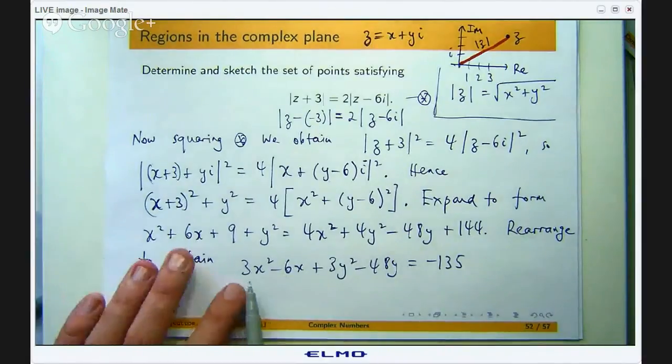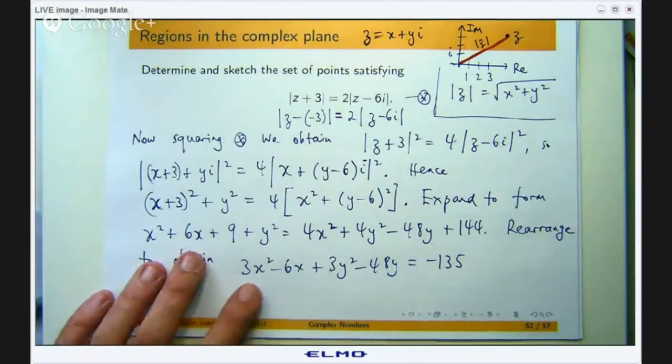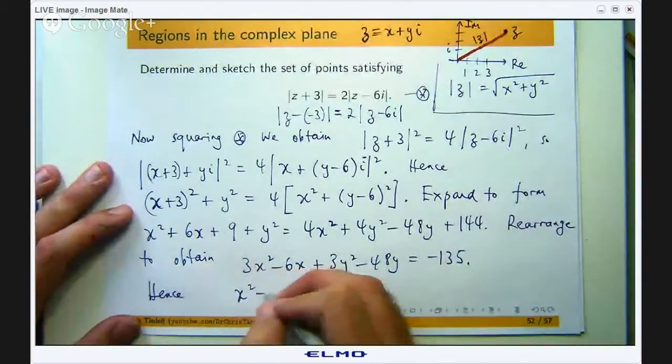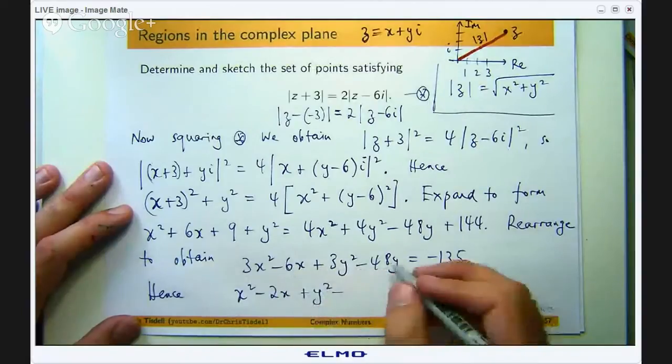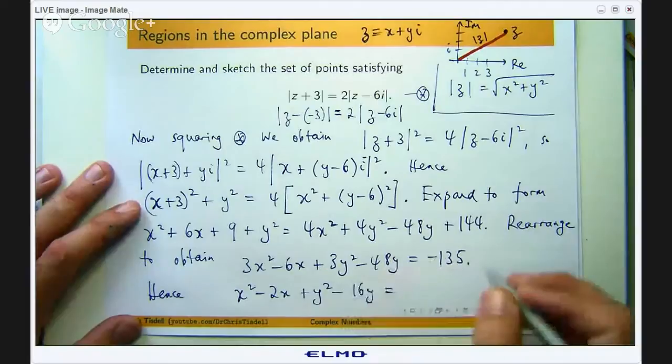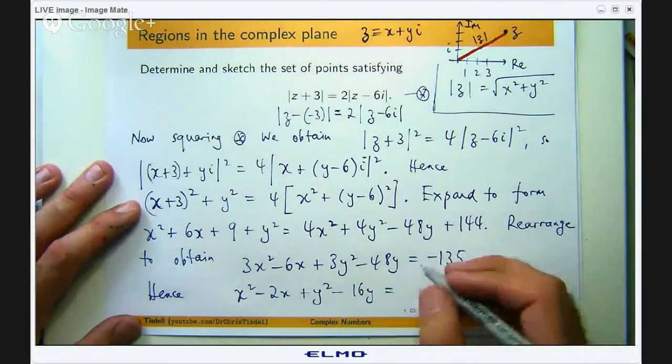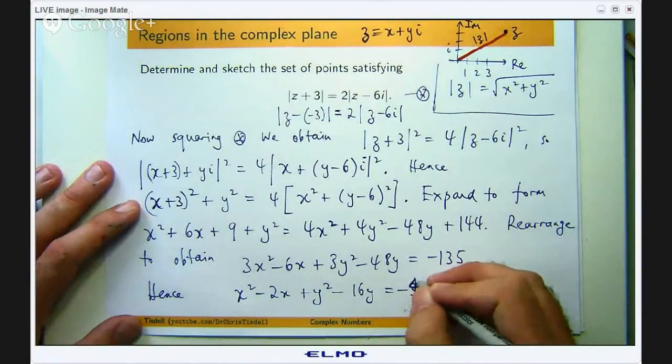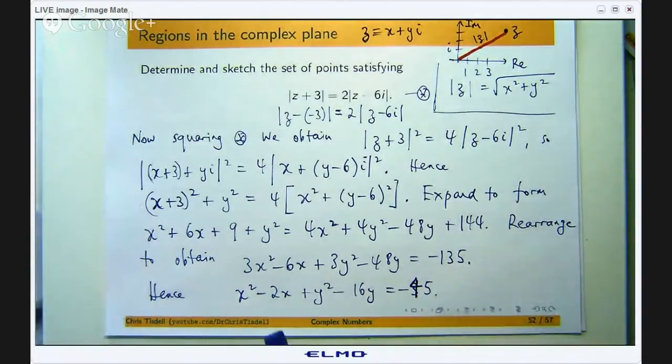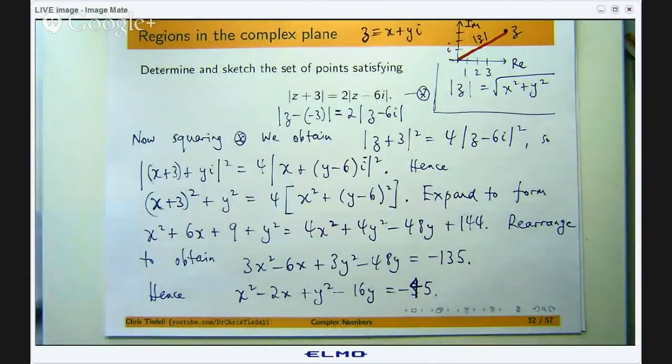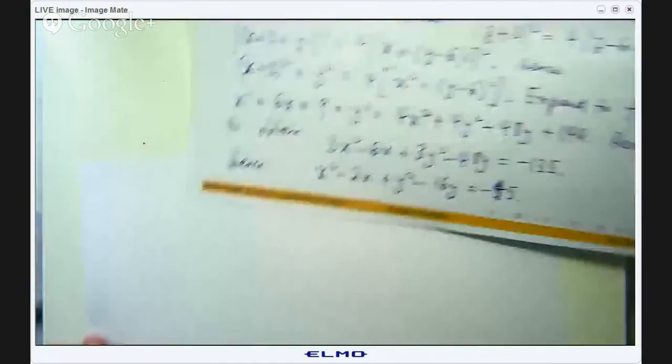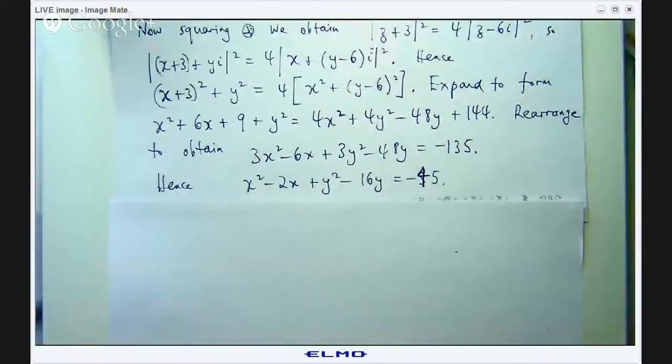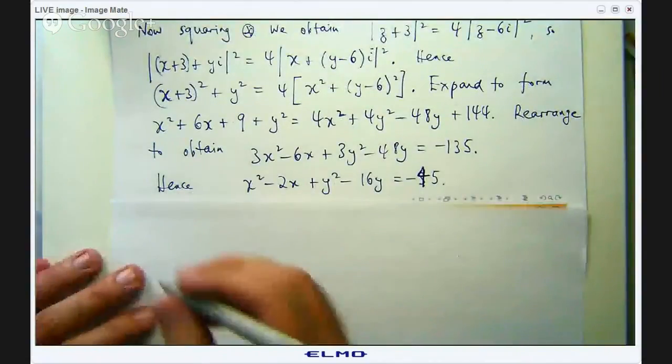So let us divide by 3 and make the coefficients of x squared and y squared 1. So that will be x squared minus 2x plus y squared minus 16/3 y, that will be 16, and if I divide negative 135 by 3 I will get negative 45. So now what I can do is complete the square in x and y because what I am looking for here is something that is familiar and if I complete the square in x and y I will get the equation of a circle where you know the centre of the circle and the radius.